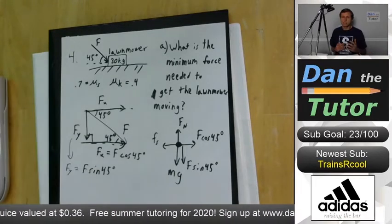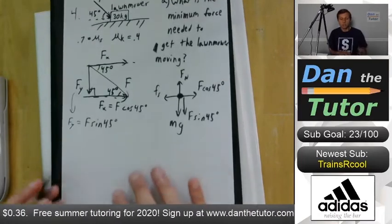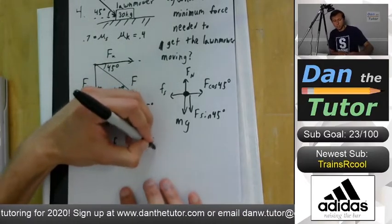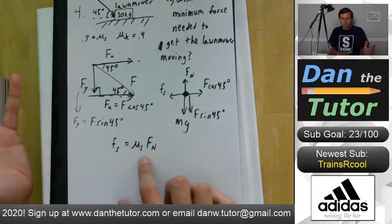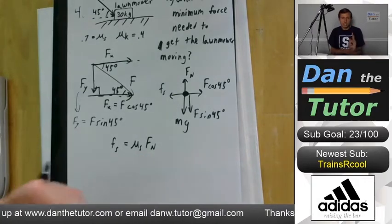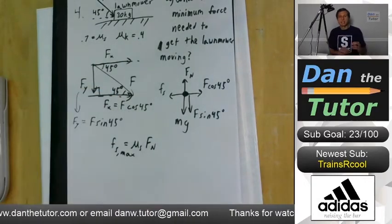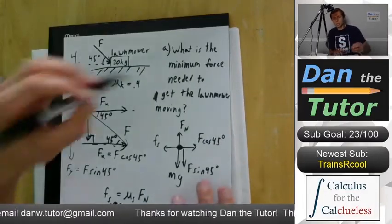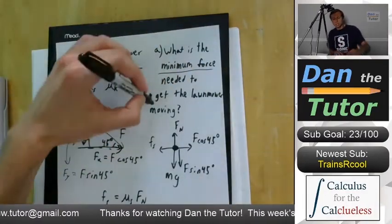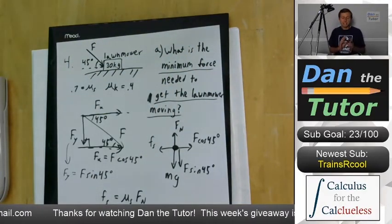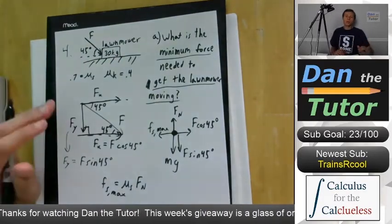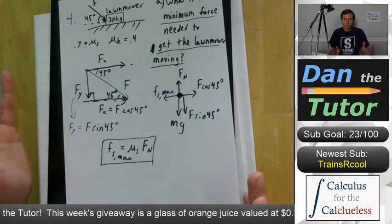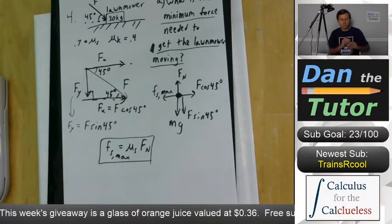There is only one time we have an equation for static friction. Static friction equals μS times the normal force only when we're talking about the maximum static frictional force - if you pushed any harder, it would start moving. Looking at the question 'what is the minimum force needed to get the lawnmower moving' - that is exactly what the max static frictional force describes, so we can use this equation.